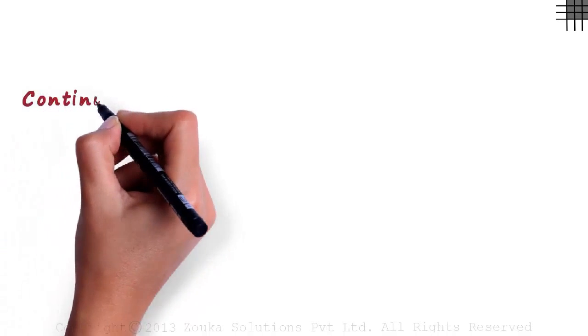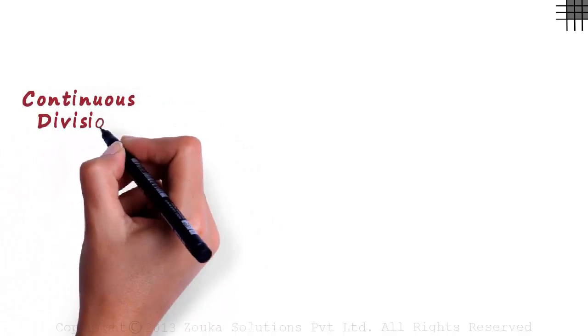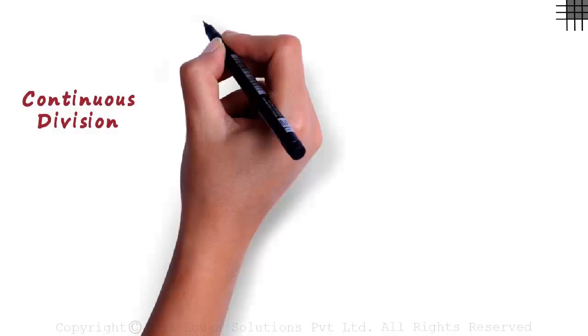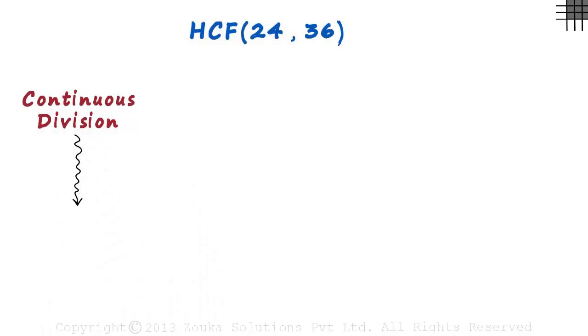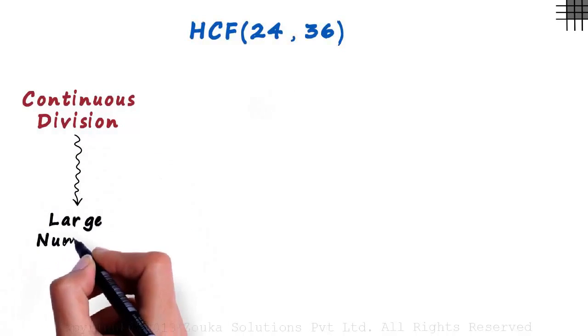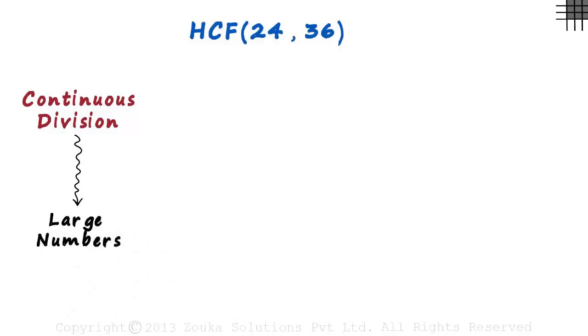In this video we will understand the continuous division method to find the HCF of two numbers. Say we want to find the HCF of 24 and 36. This method is generally used for large numbers, but first let's try it out with smaller ones.